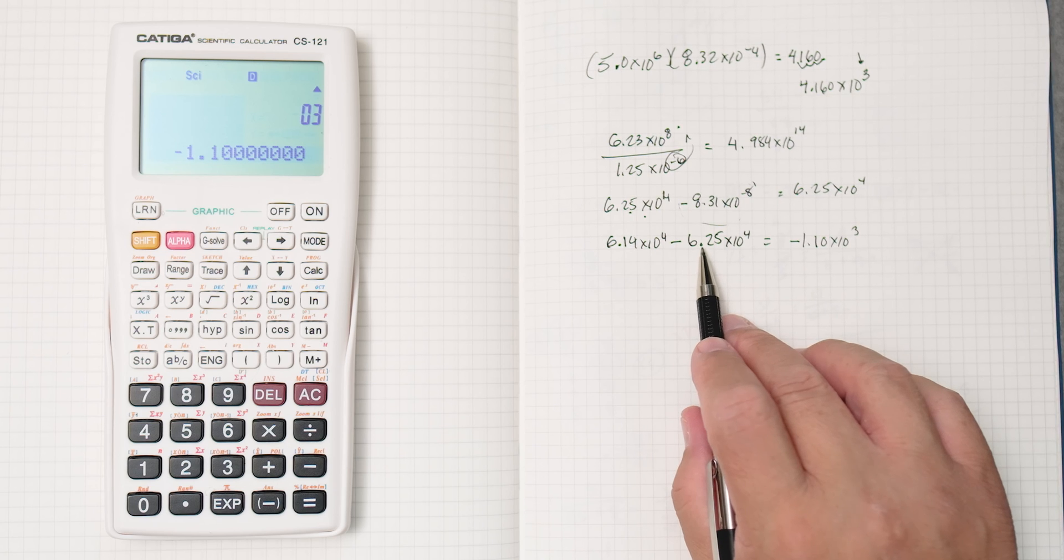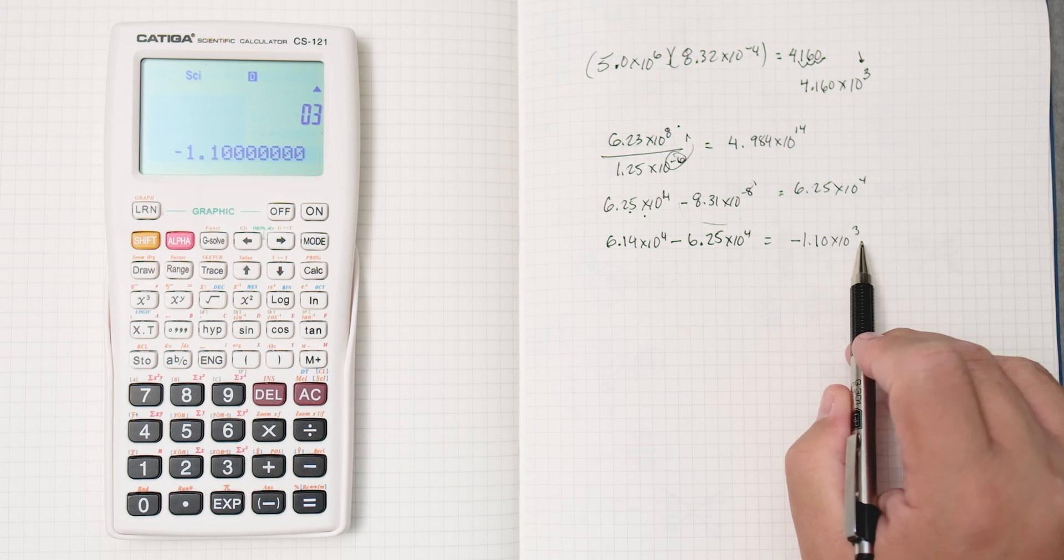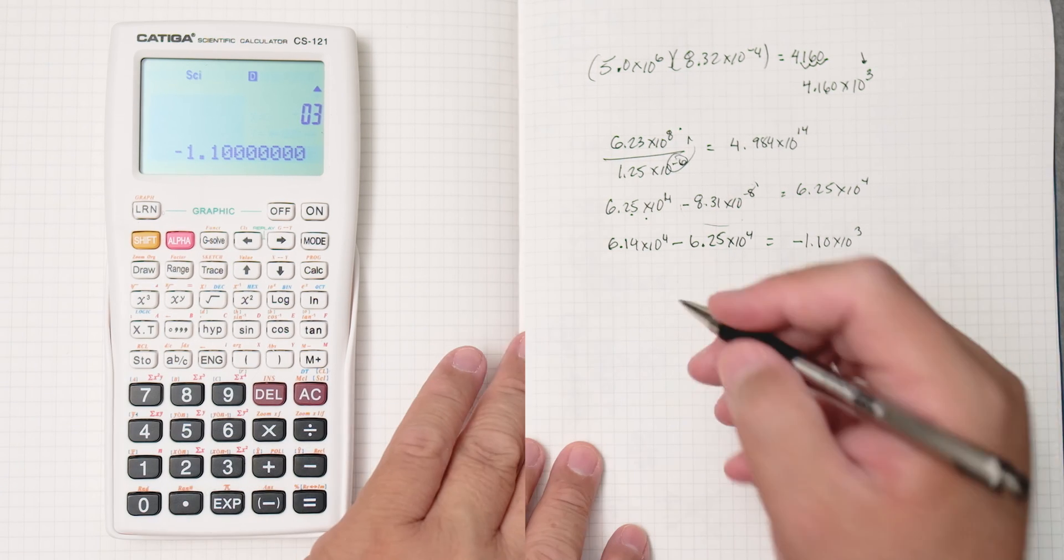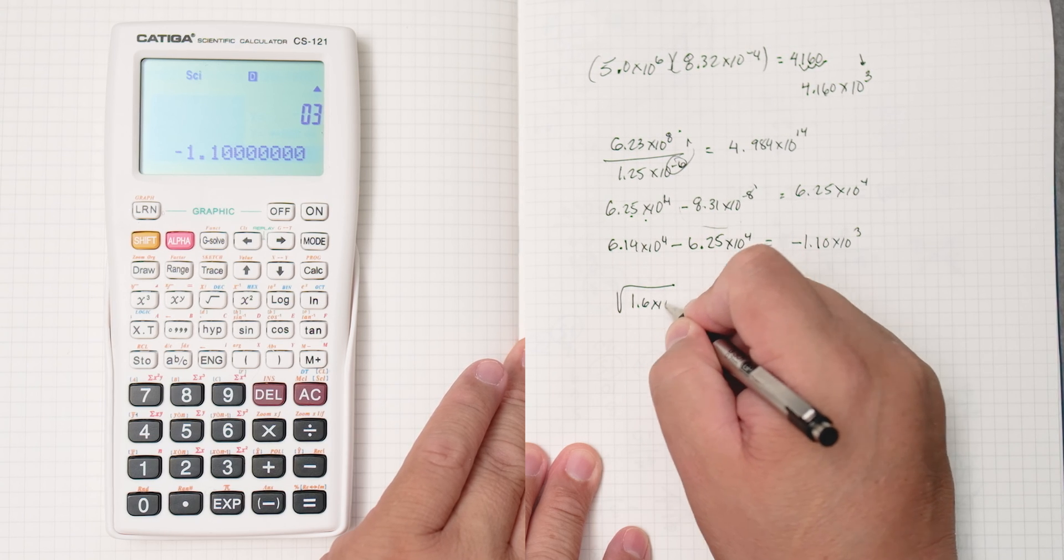As you can see, this number is bigger than that one, so that's going to take the sign. And then you can see that the exponent now is a 3. Okay, what about square roots?